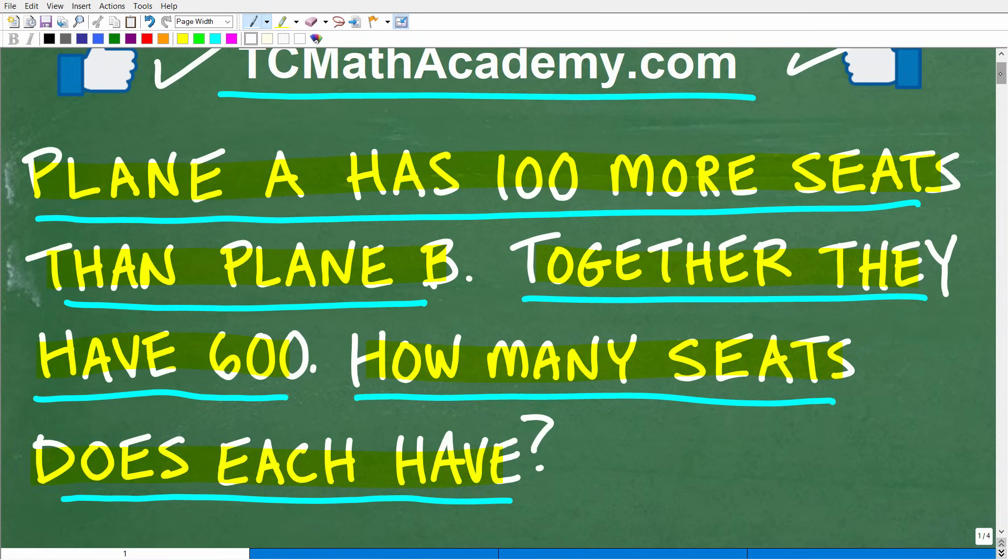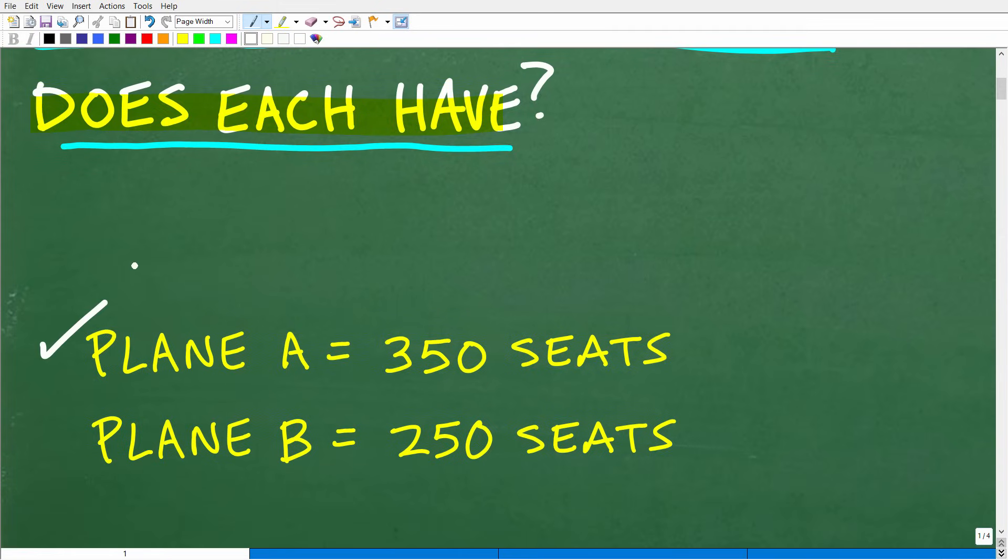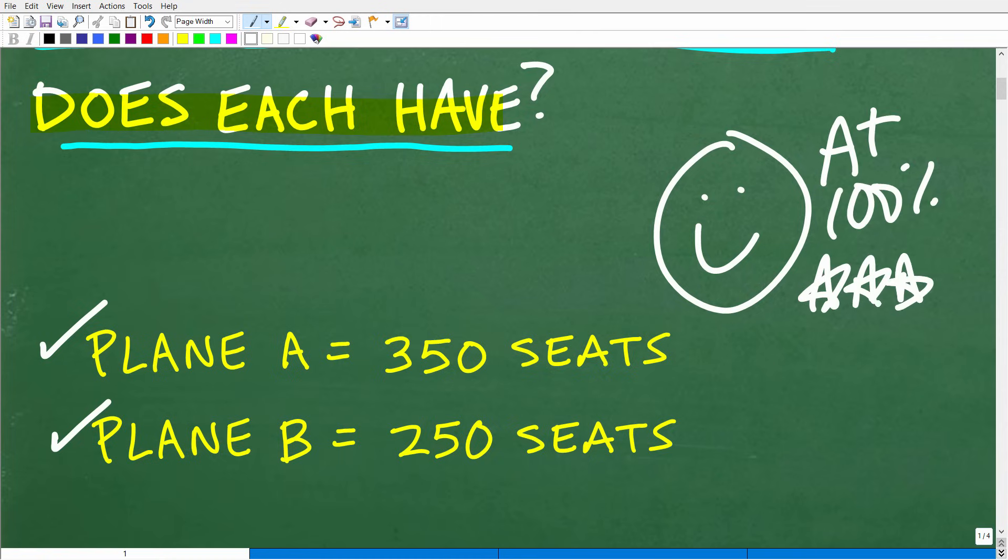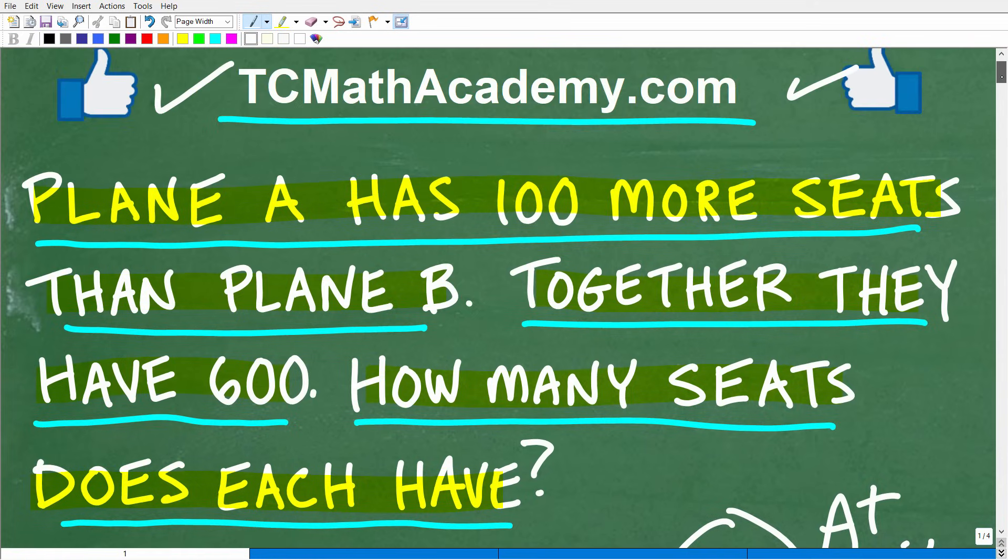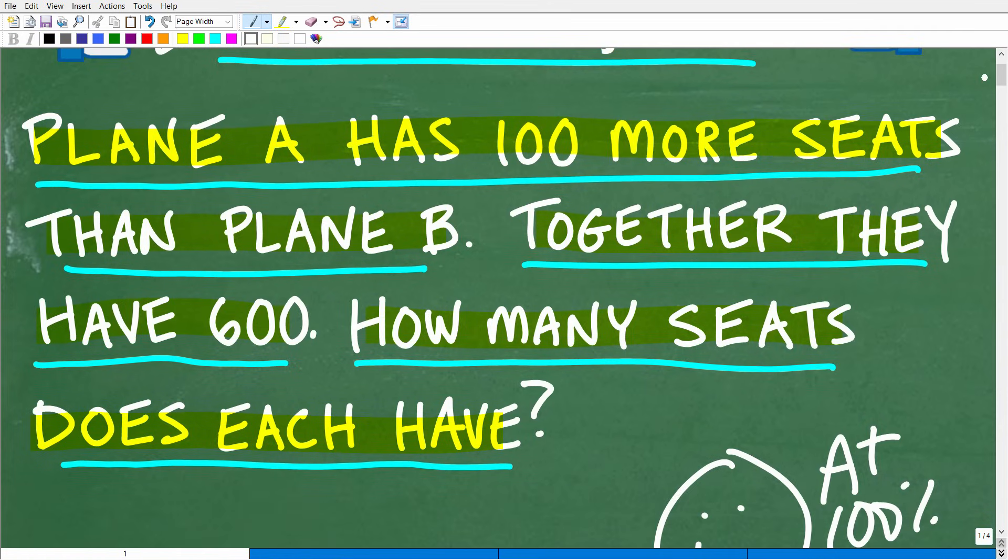All right, so let's take a look at the answer. The correct answer is plane A has 350 seats and plane B has 250 seats. So how did you do? Well, if you were able to solve this problem, that is fantastic. Matter of fact, I'm going to give you a nice little happy face and a plus 100%. You can brag to your friends and family that indeed you are an expert in using algebra to solve a math word problem.